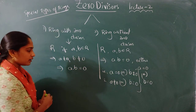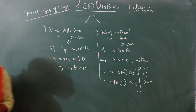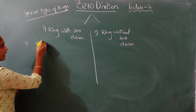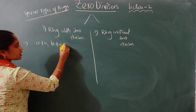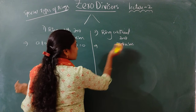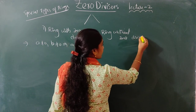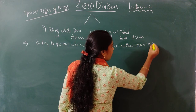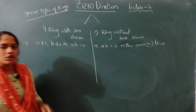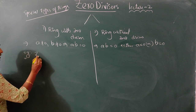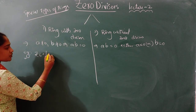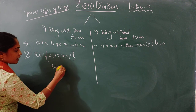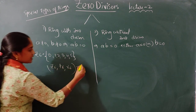Let us take Z6. How many elements are there? Six elements: 0, 1, 2, 3, 4, 5. Z6 with respect to addition and multiplication is a ring — it satisfies the three conditions of a ring. Now you have to check whether Z6 is a ring with zero divisors or without zero divisors.